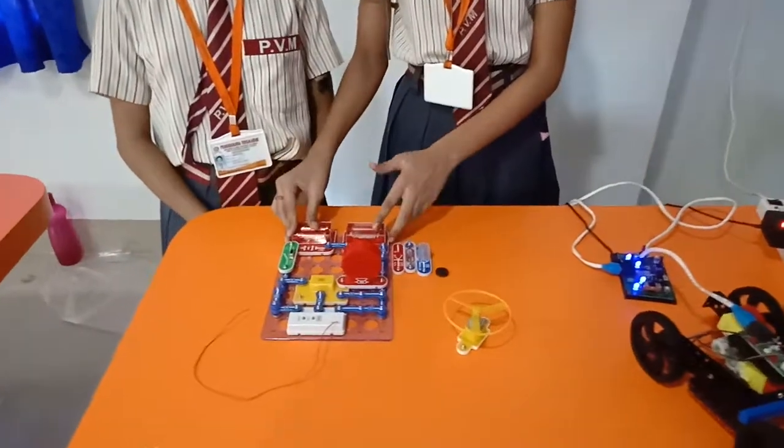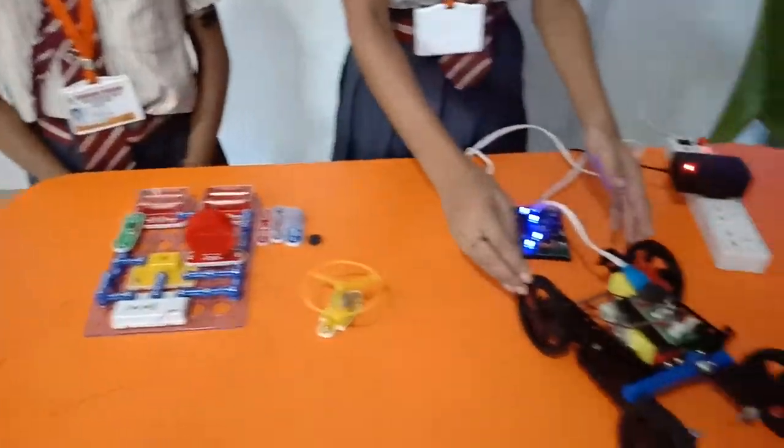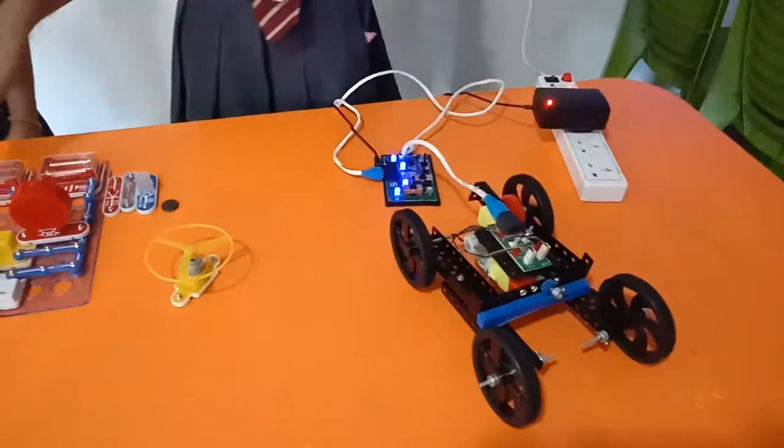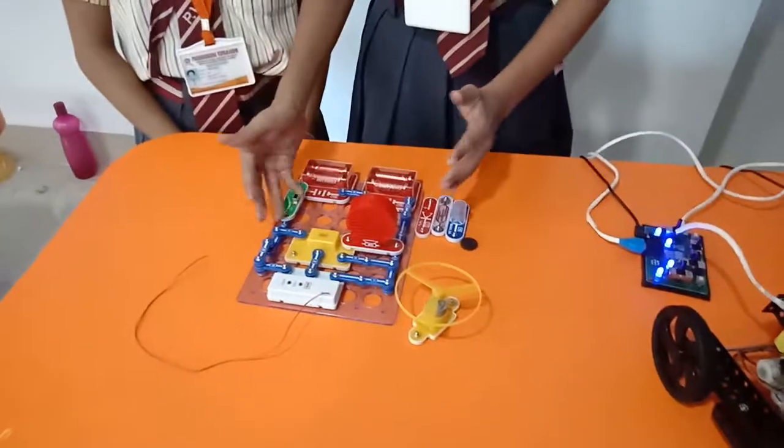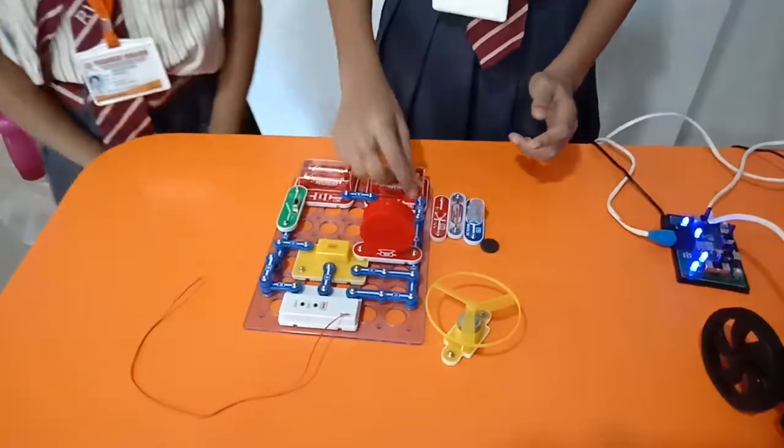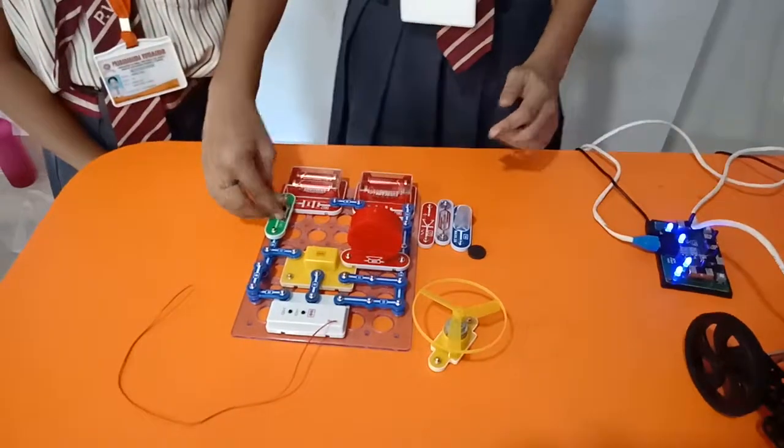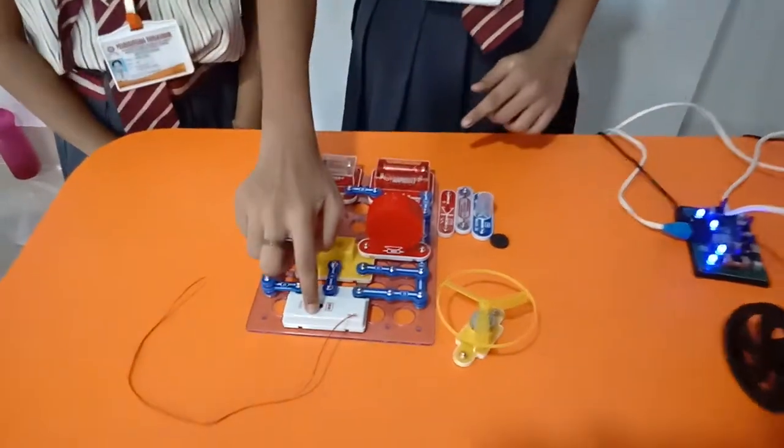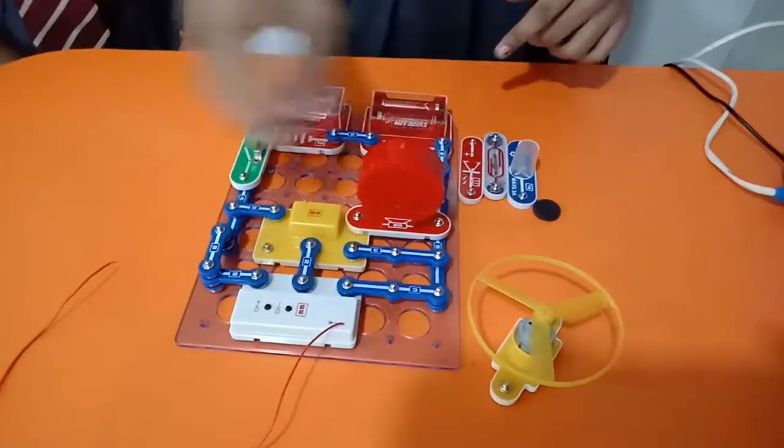The first project name is the circuit and FM radio and our second project name is steering car. In this circuit and FM radio we have used four batteries, connecting wires, switch, music player, remote, and FM radio and bass.